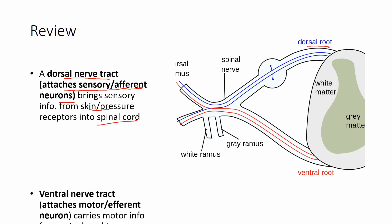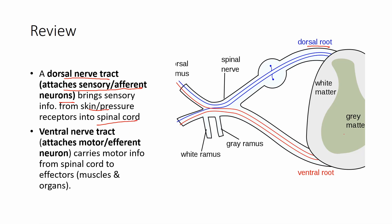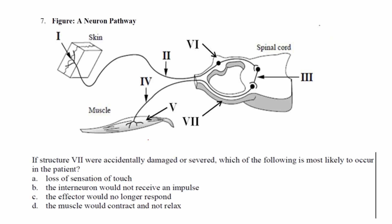The one beneath, we already said is the ventral, now sometimes they call it the ventral root, but we know it to be the ventral nerve tract. And that attaches, as we said, the motor or the efferent neuron, and it's carrying messages from the spinal cord to the effectors, in this case or in the diagram of the practice question, to the muscle. Again, effectors can either be muscles or organs.